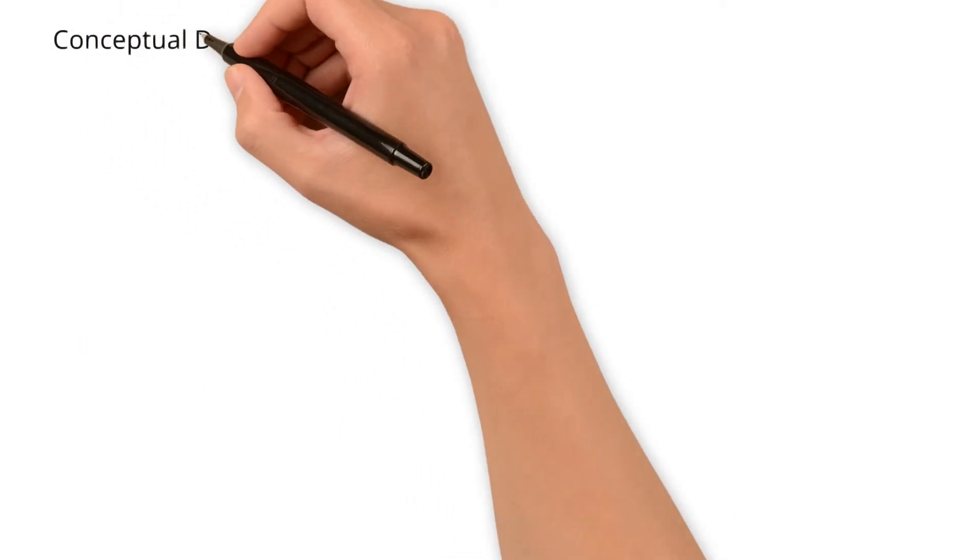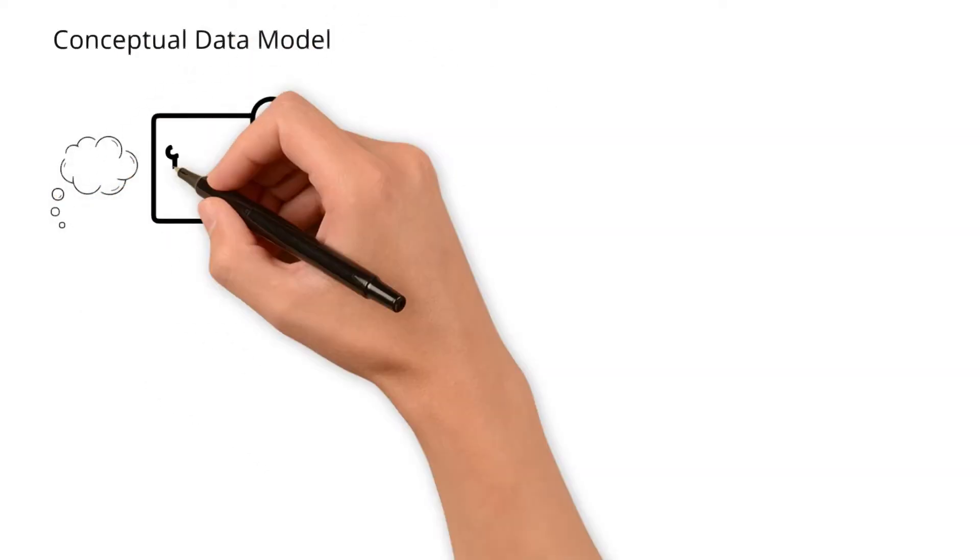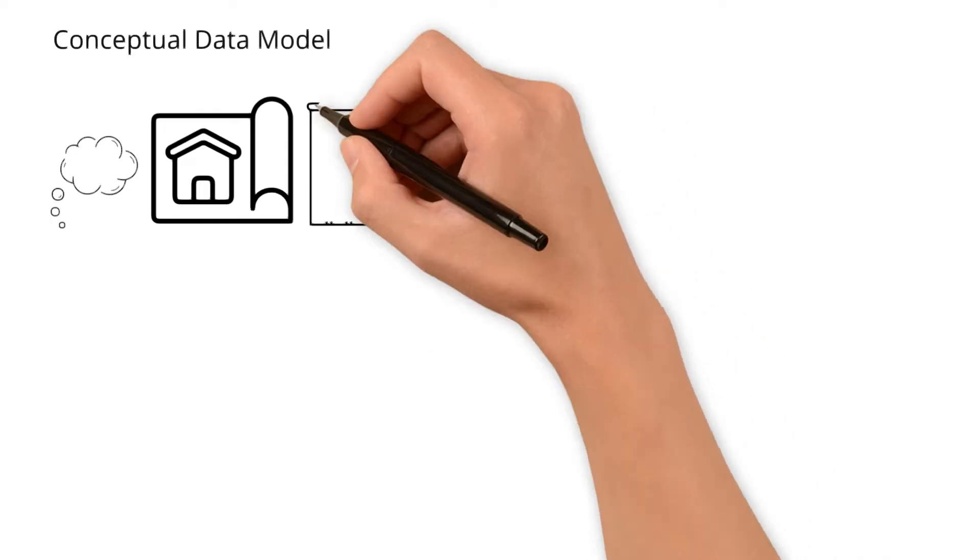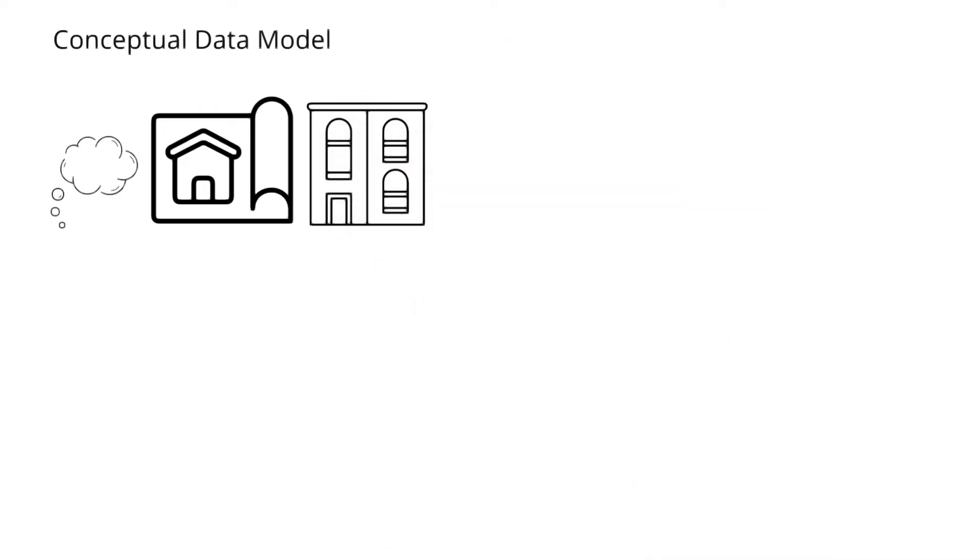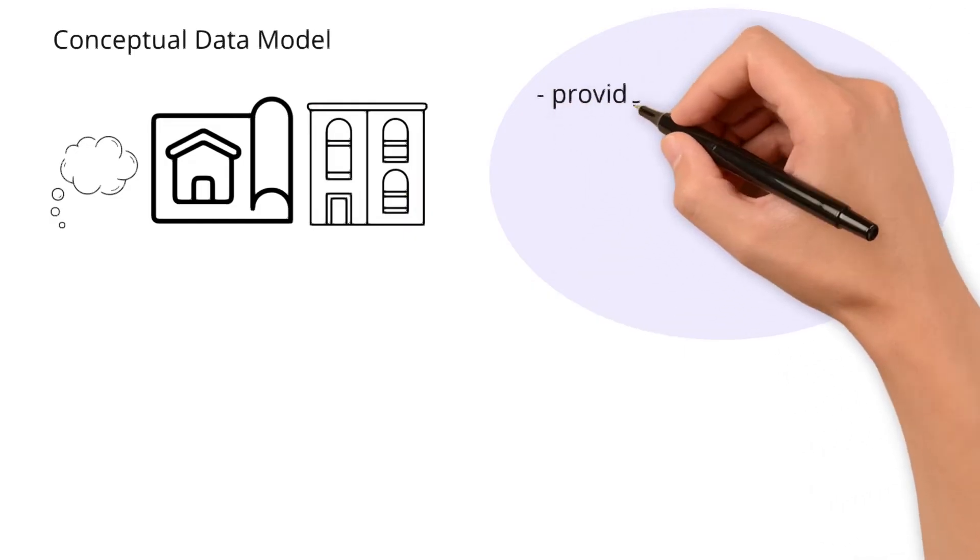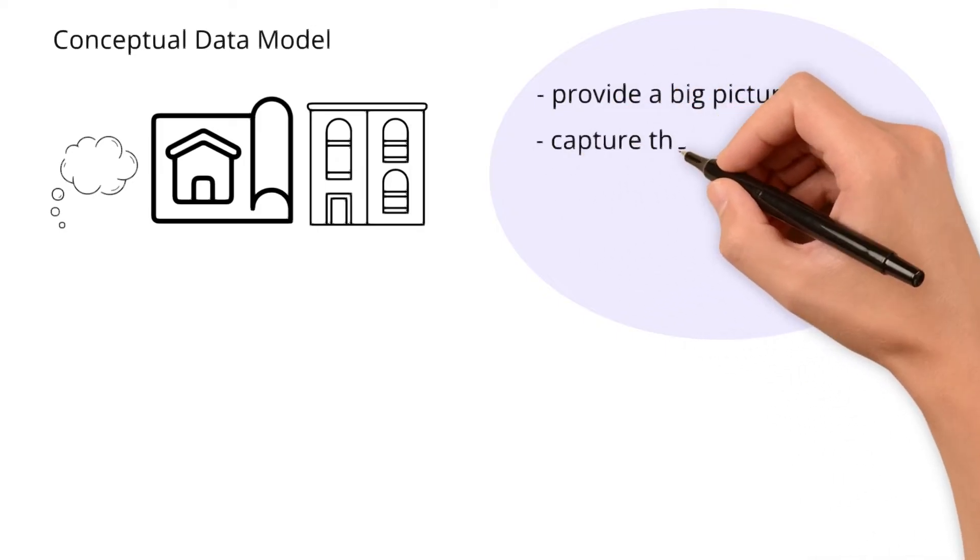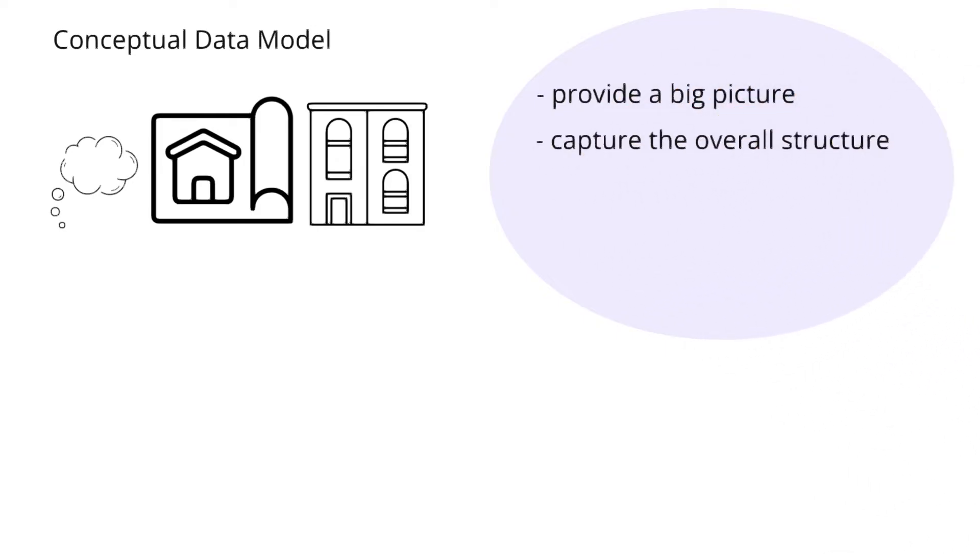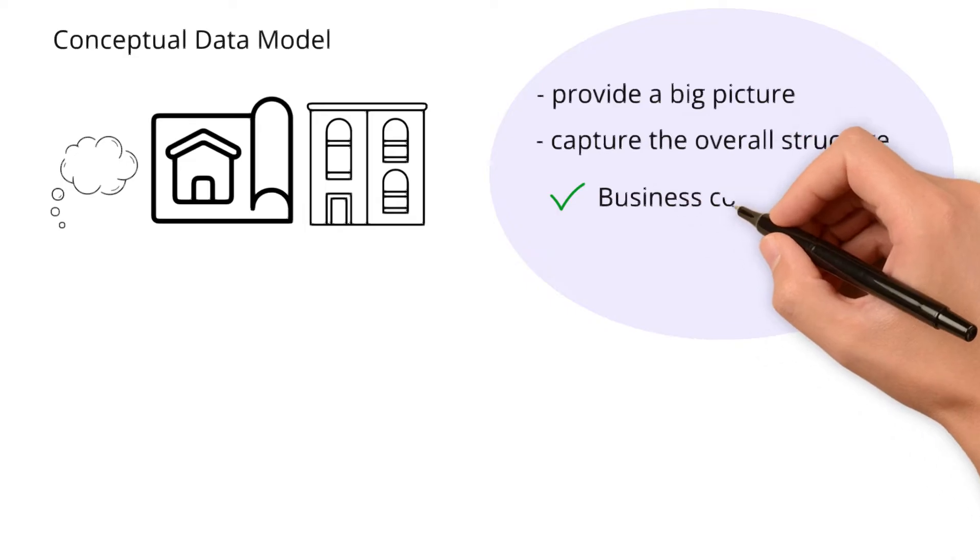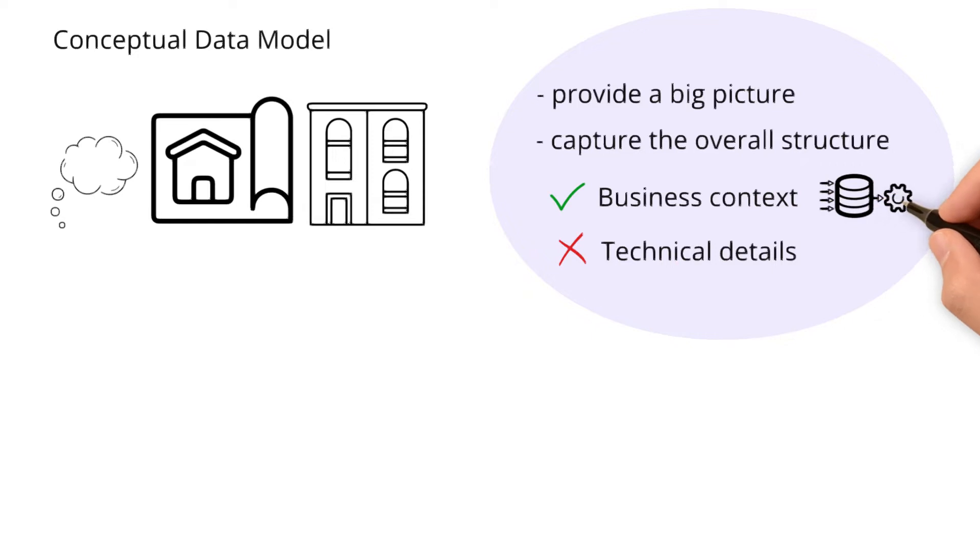Conceptual data model is like putting your vision of your dream home on paper, how many rooms and how they should be connected. Meaning, conceptual data model provides a big picture of the system. This aims to capture the overall structure of the data within the business context, without going into the technical details of how the data will be stored or processed.